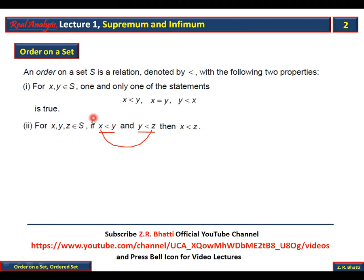Yani, set ke upar jo order define kiya jata hai, woh ek relation hai jisko 'less than' se denote karte hain. Aur woh pehli condition yeh satisfy karti hai: set ke koi bhi do elements liye jayen, to un dono ke darmiyan ya x less than y hoga, ya x equal y hoga, ya y less than x hoga. Doosari condition yeh hai: agar x less than y aur y less than z hai, to x less than z hoga.